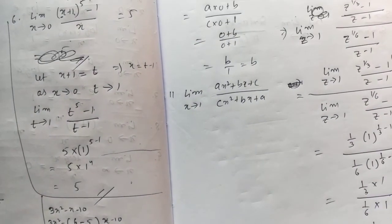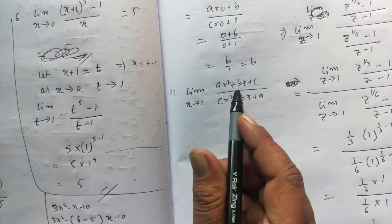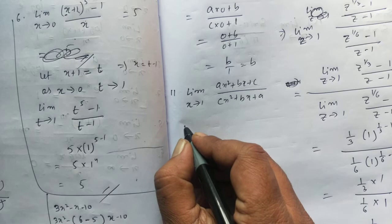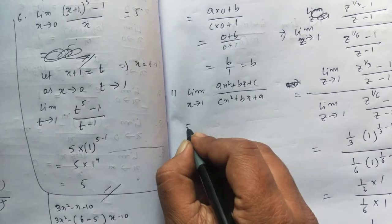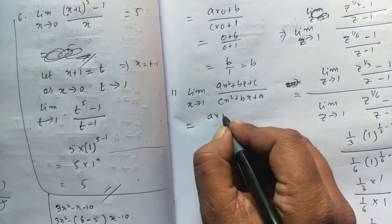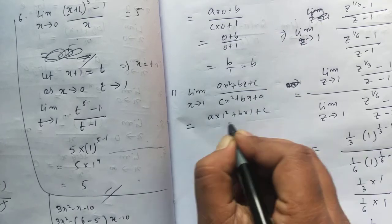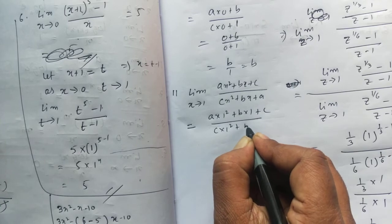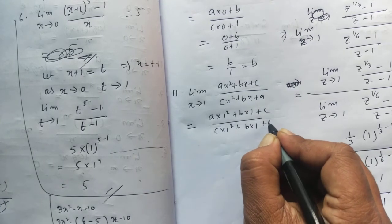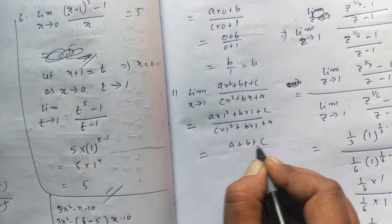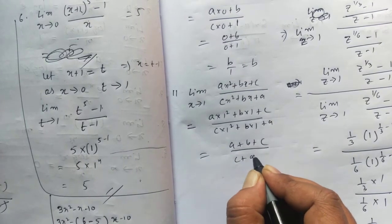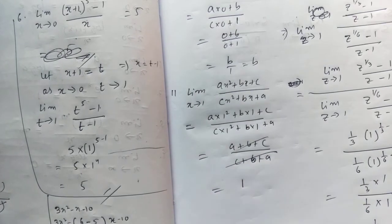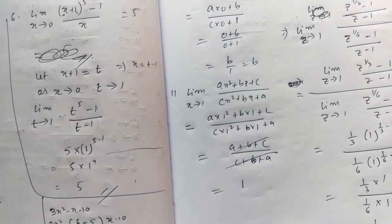Let's do question number 11. Limit x tends to 1. In place of x, you put 1. We're getting (a + b + c) / (c + b + a). Since both are the same, we can cancel and we get 1.